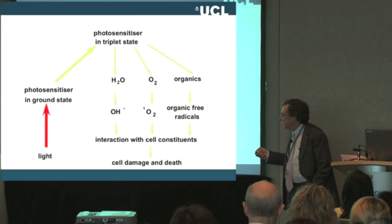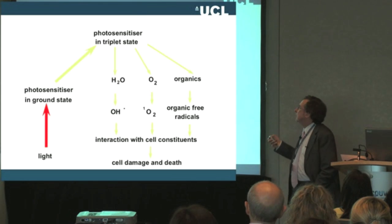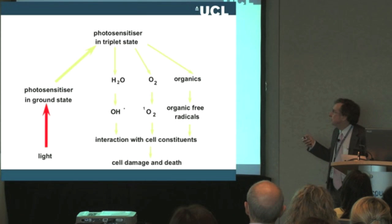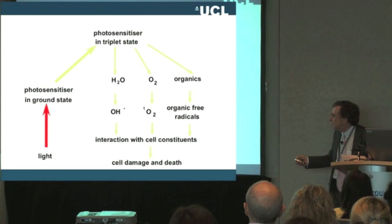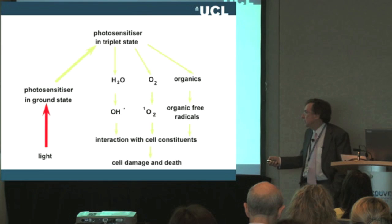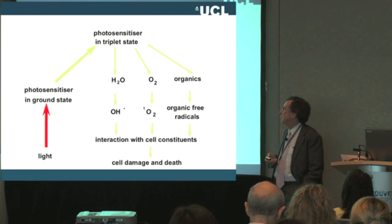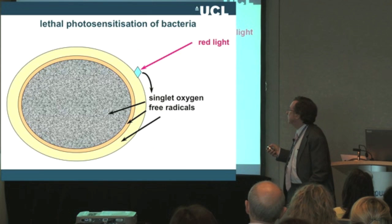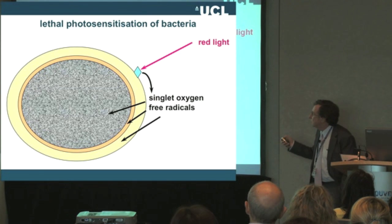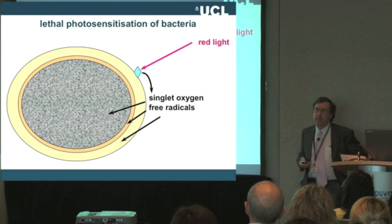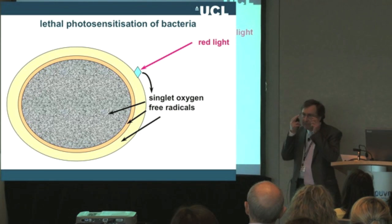So the photosensitizer absorbs light, is promoted to a high-energy triplet state, then reacts with water, oxygen, or organic molecules to form these very reactive species, which can then interact with any neighboring bacteria or microbes and cause cell damage and death. That's the principle behind it: our photosensitizer is irradiated and these reactive species damage the cell.